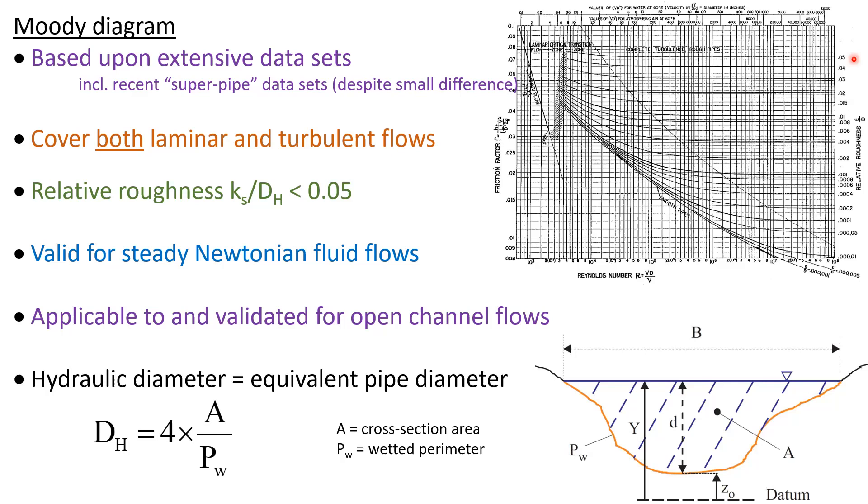On a circular pipe, the hydraulic diameter would be equal to the pipe diameter.